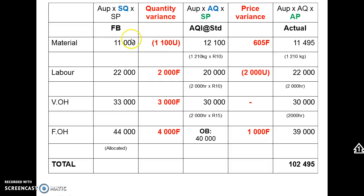For the quantity variance calculation: the flexible budget shows material should have cost 11,000 Rand; the middle column shows the actual quantity used at standard price costs 12,100 Rand — a difference of 1,100 Rand unfavorable (U). Using the formula: standard quantity = 1100 units × 1 kg = 1100 kg, versus actual quantity of 1210 kg. The difference is 110 kg more than we should have used, multiplied by the standard price of 10 Rand = 1,100 Rand unfavorable quantity variance.